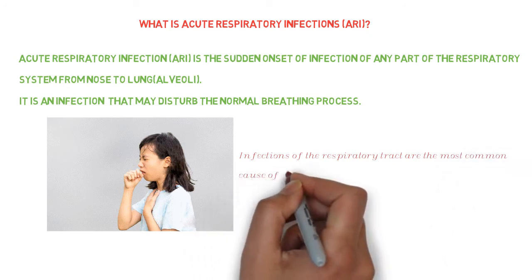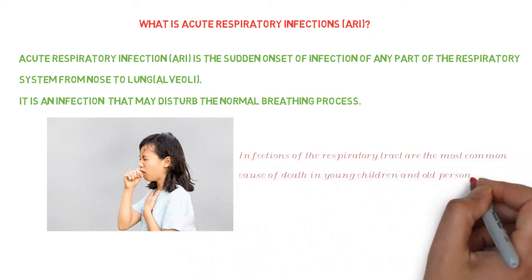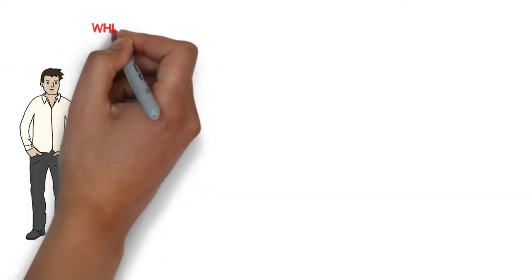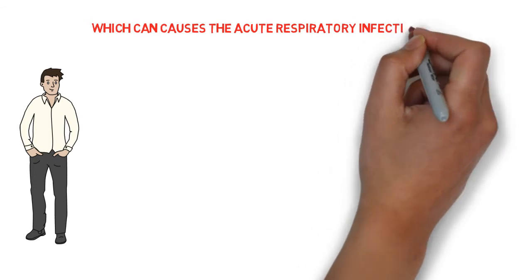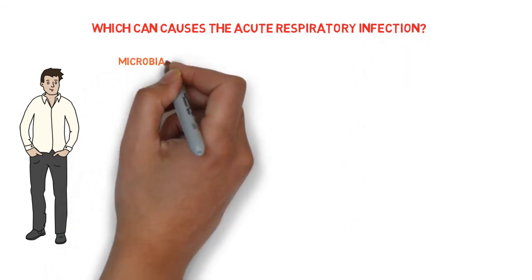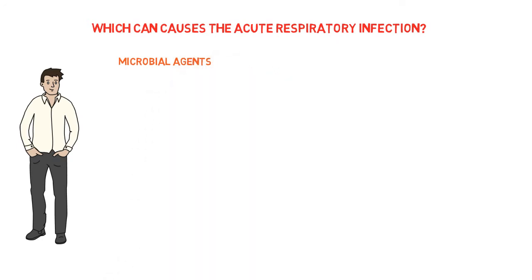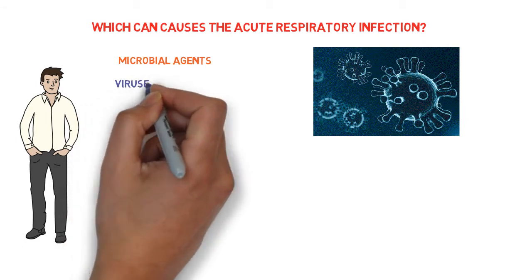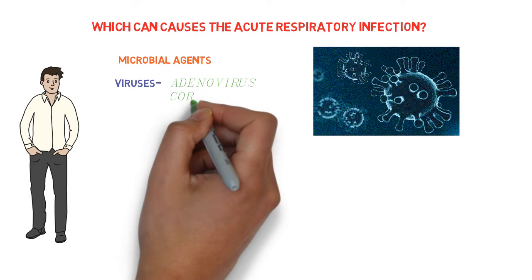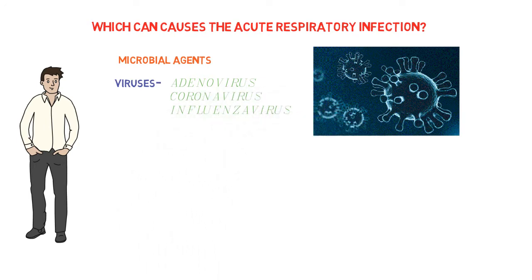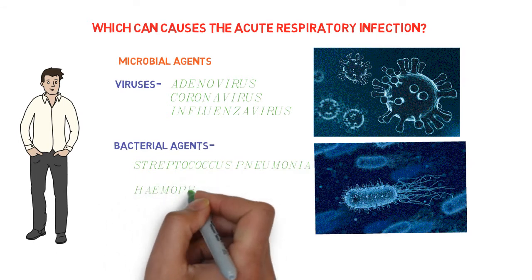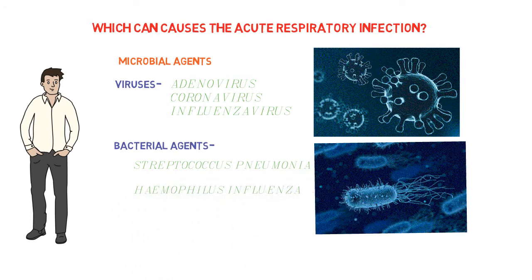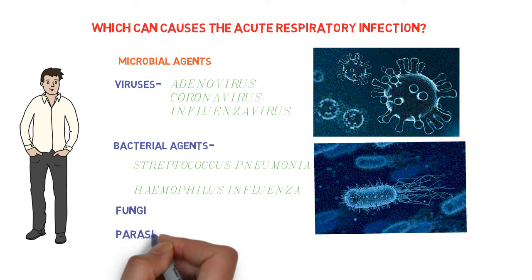Now we will know which agents cause acute respiratory infection. The microbial agents are the main cause. These may be viruses like adenovirus, coronavirus, influenza virus, etc., bacterial agents like Streptococcus pneumoniae, Haemophilus influenzae, or it may be fungi, parasites, or allergens.